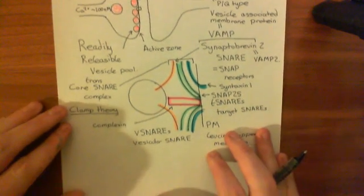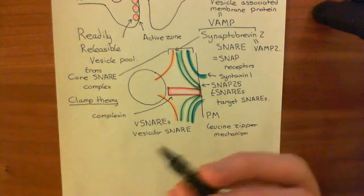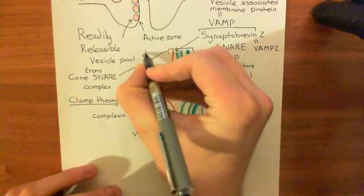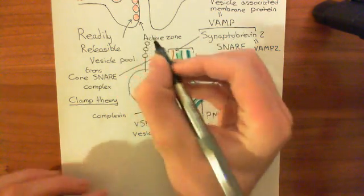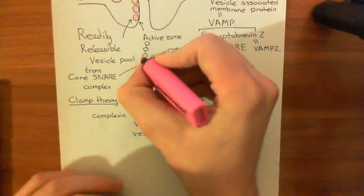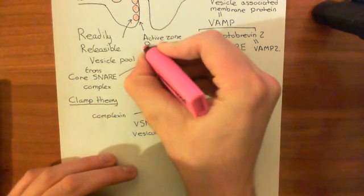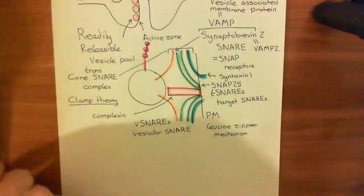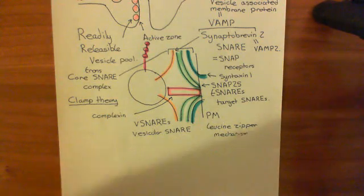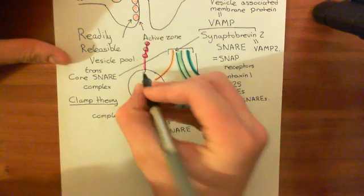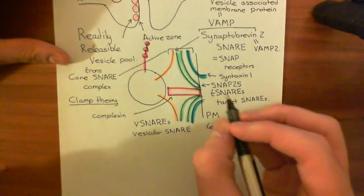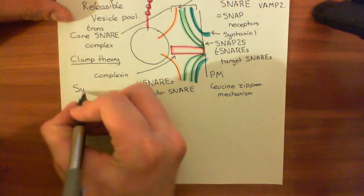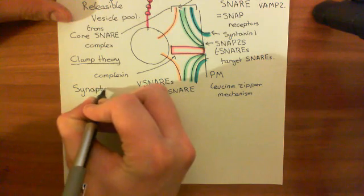There is a protein in the membrane of the synaptic vesicle which is a calcium sensor. This protein is synaptotagmin. Synaptotagmin is going to bind to calcium when calcium levels rise, and calcium is going to activate it.